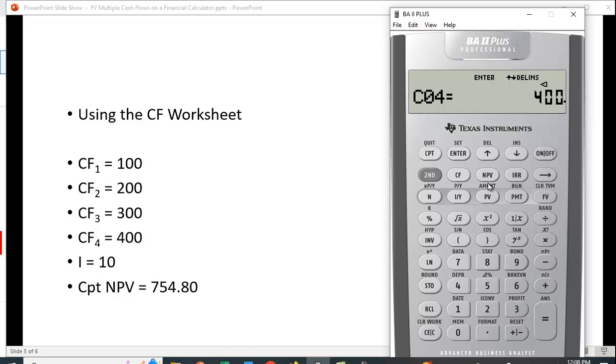So now what we want to do is we want to hit the NPV key and put in the interest rate. The interest rate is 10 percent, again hit enter so we see the equal sign, arrow down NPV compute. That gives us the value at year zero, 754.80.